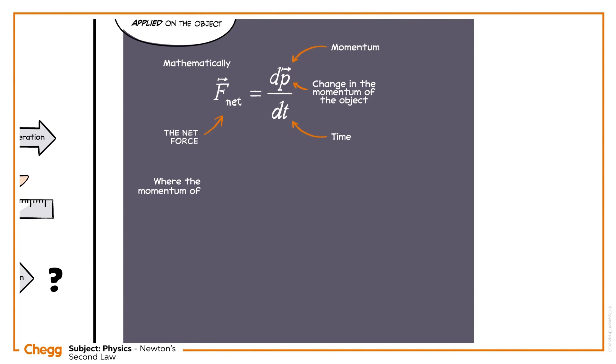The momentum of an object is p = mv, where m is the mass of the object and v is the velocity of the object. The direction of the momentum is same as the direction of the velocity of the object.